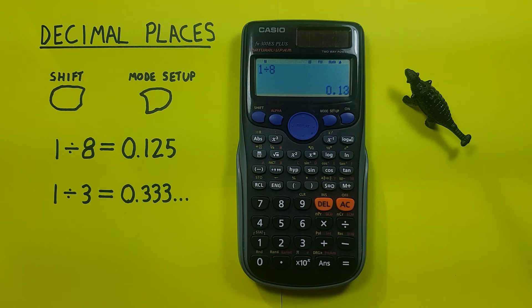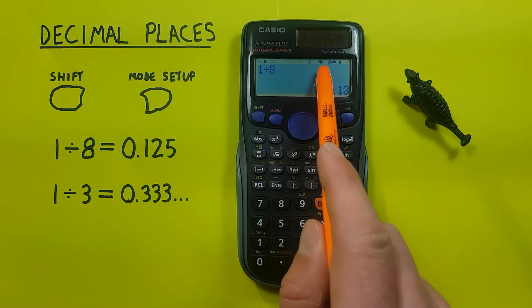We can tell we're in fix mode because the word fix will appear at the top of the screen, so if you're getting a result that seems off or rounded, be sure to check that.